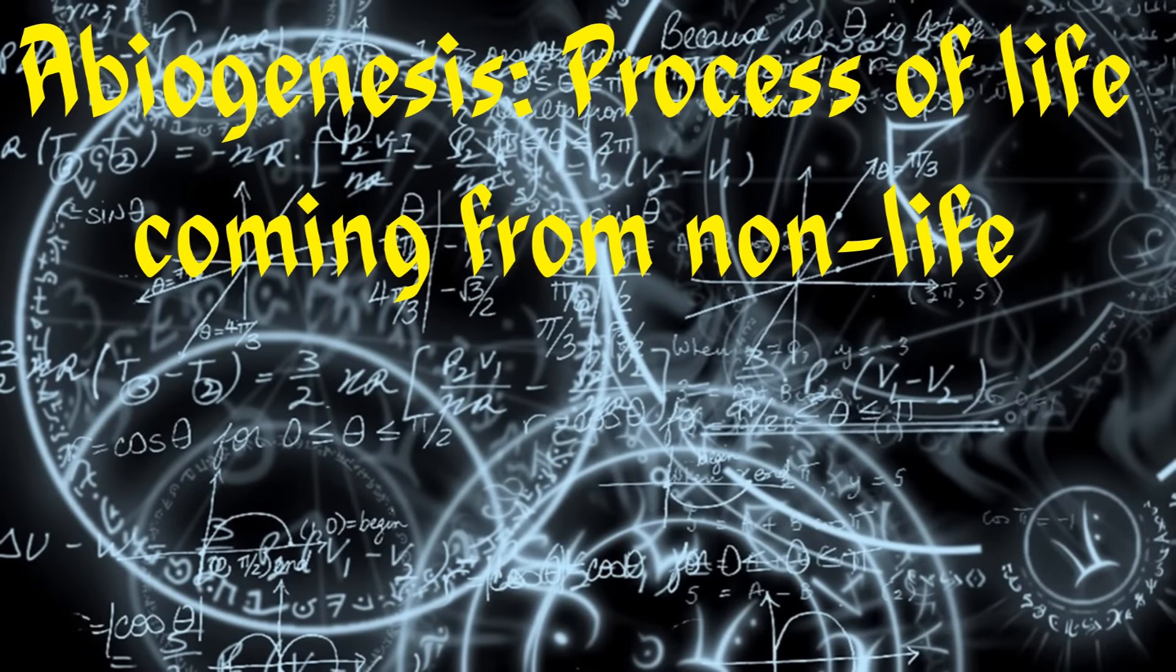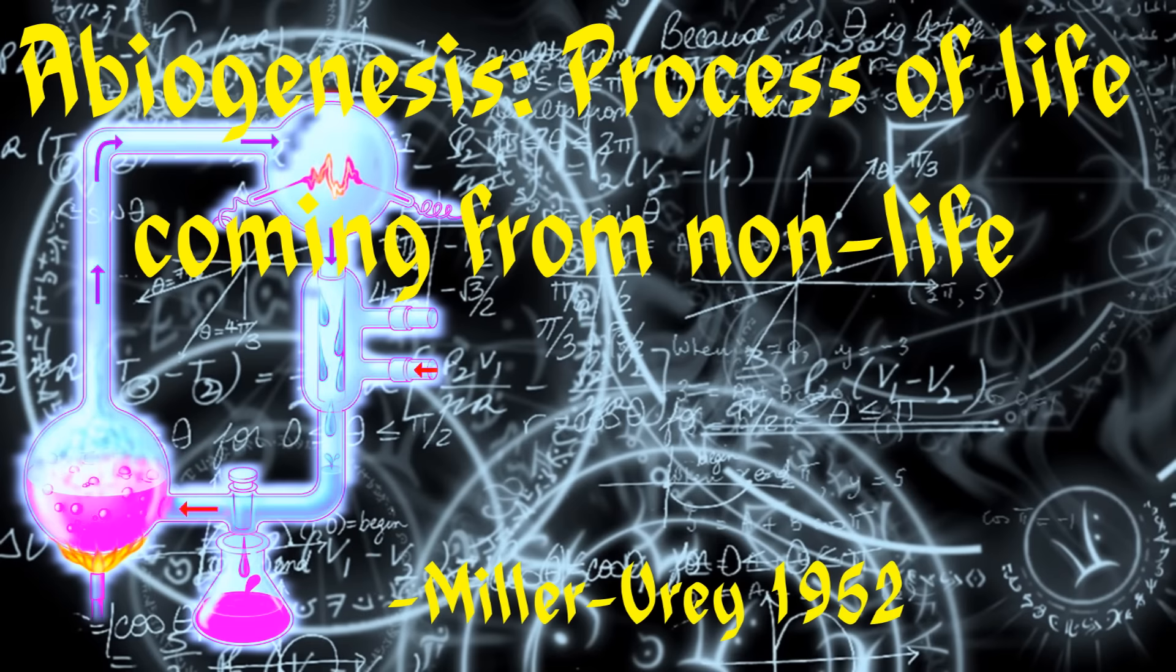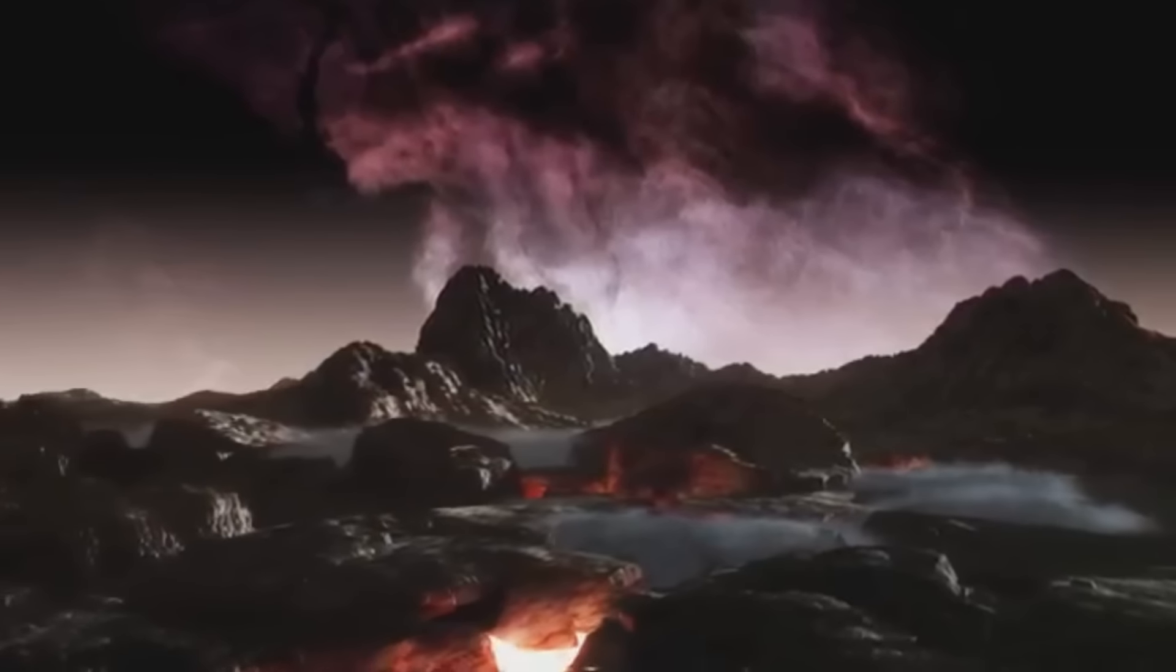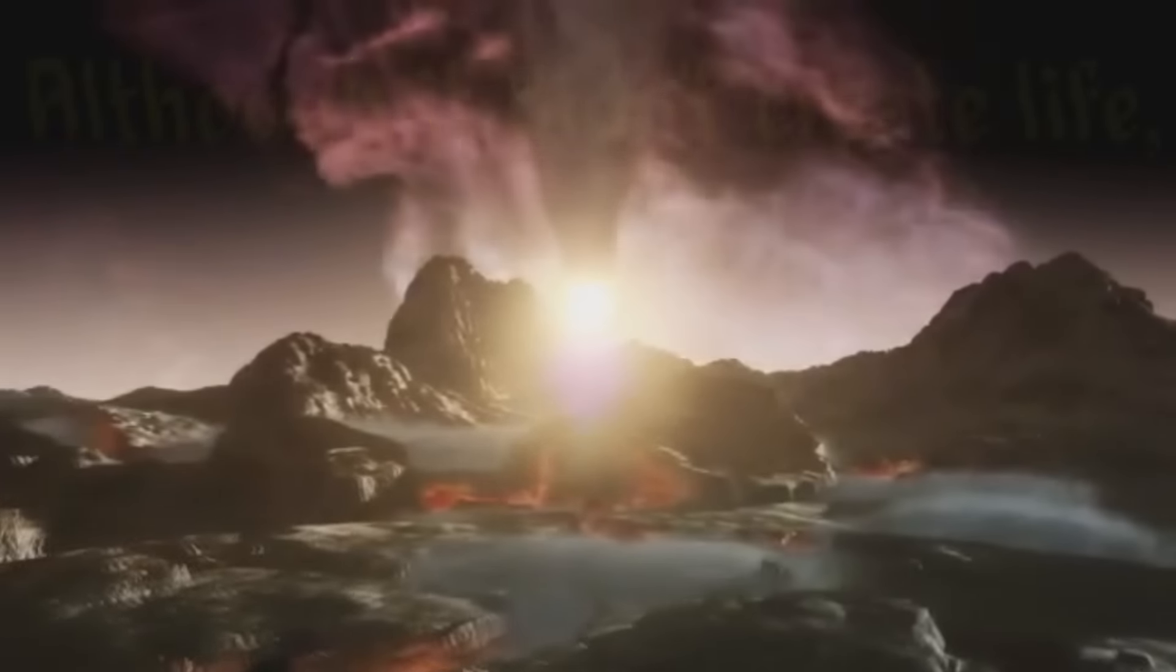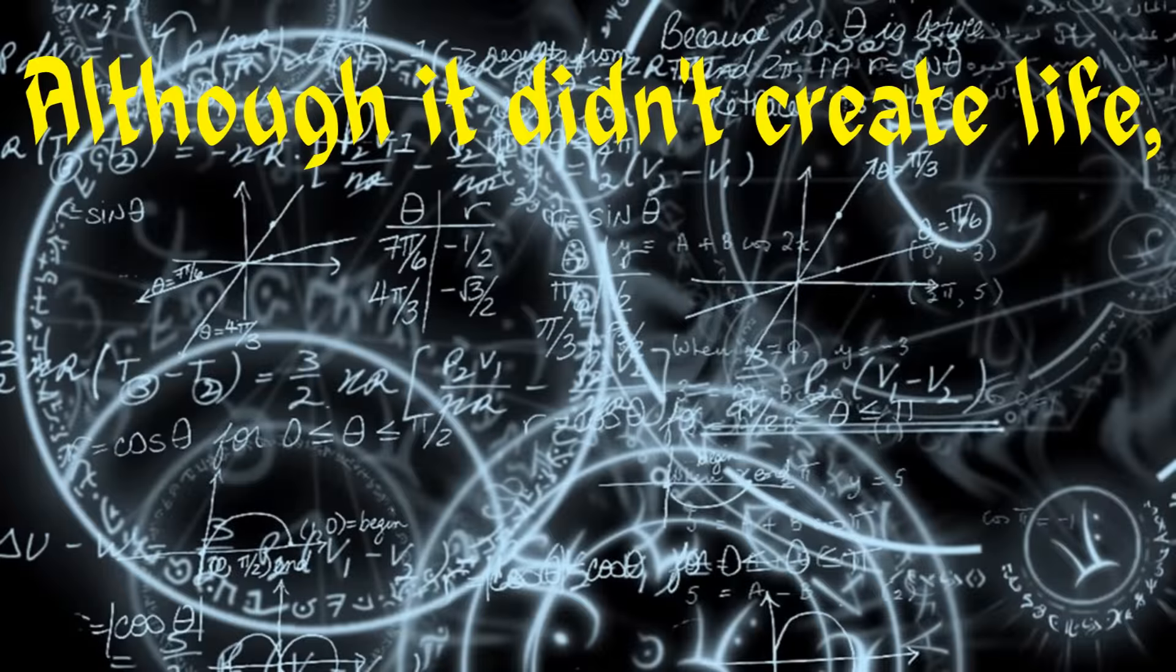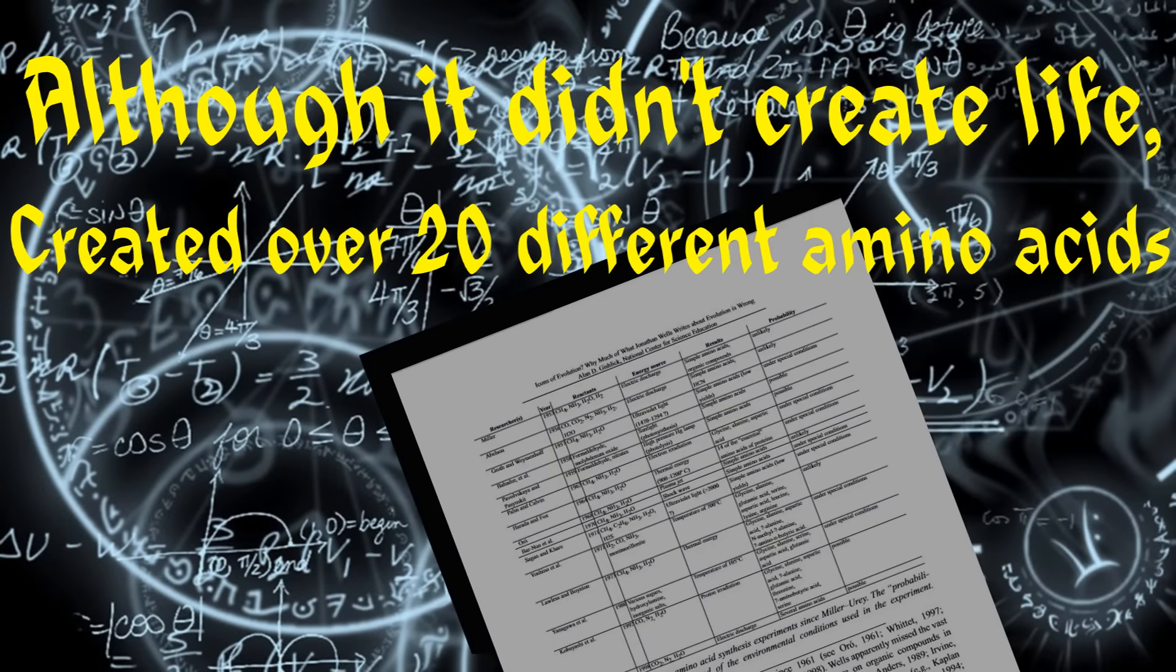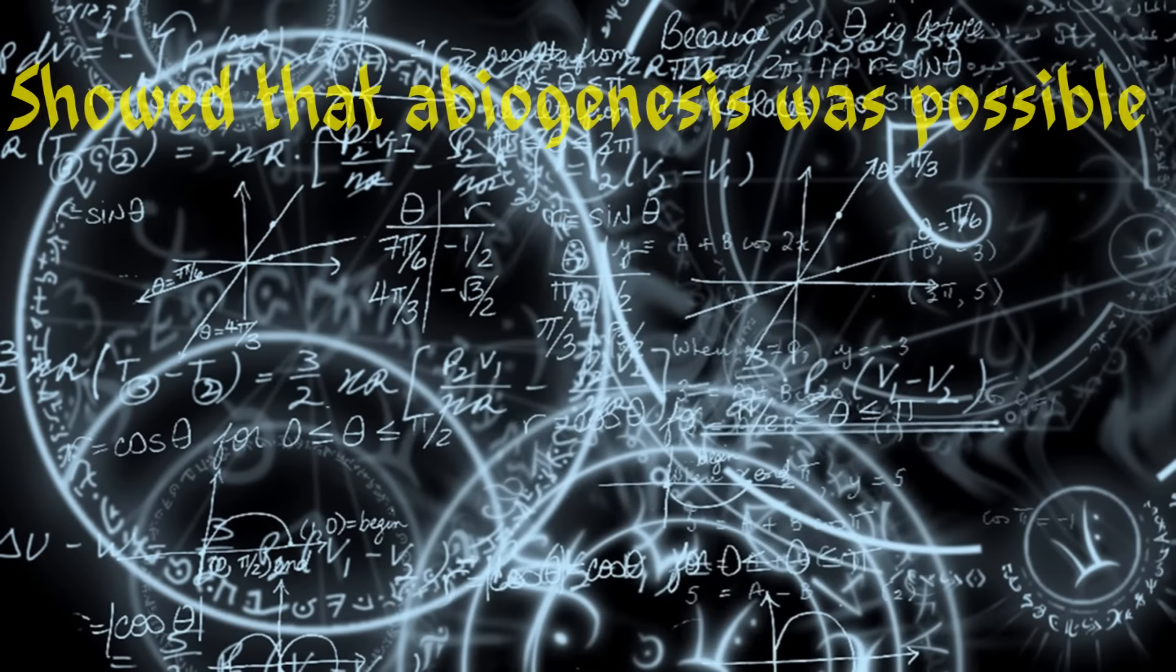Abiogenesis is the process of life coming from non-life, which was not even thought possible until 1952 when they performed the famous Miller-Urey experiment. The experiment was designed to mimic the conditions of what was thought to be early Earth. Although the experiment didn't create life, it did create over 20 different amino acids, well over the amount of amino acids life produces naturally. The experiment demonstrated that abiogenesis was at least possible.